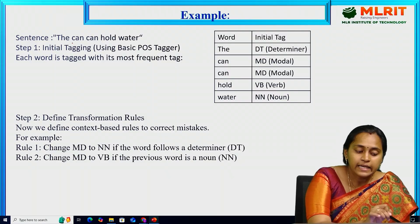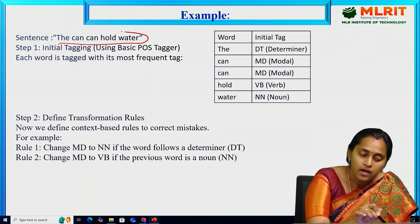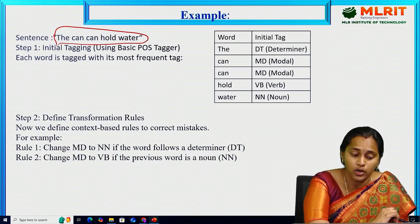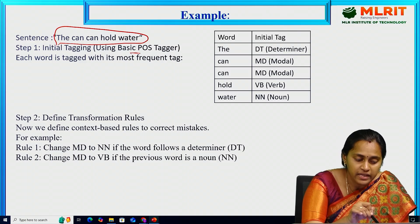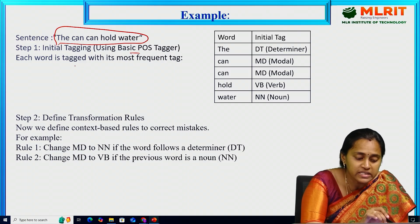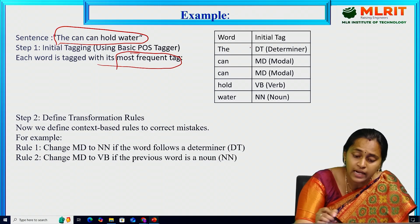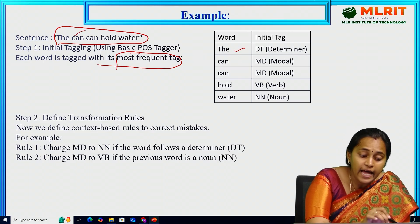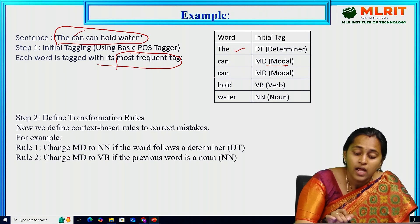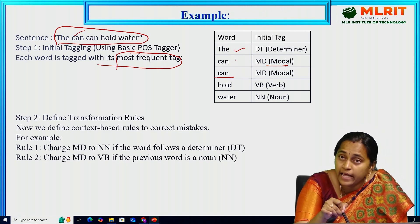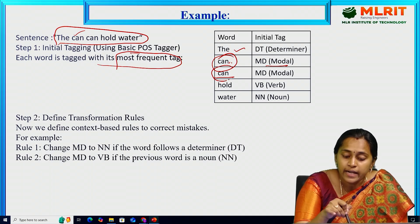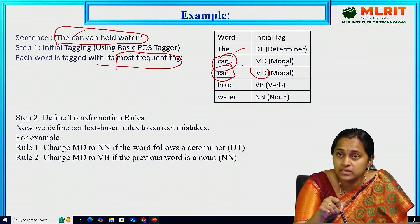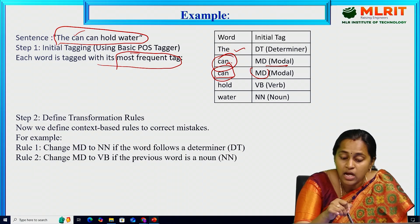The example sentence is: 'The can can hold.' In the initial tagging step, each word is tagged with its most frequent tag. So 'the' is a determiner. 'Can' is initially tagged as a modal — by default it first takes modal. But according to human evaluation criteria, the first 'can' here is actually a noun. The second 'can' is a modal. So we need to modify this by building tags to correct the sentence.